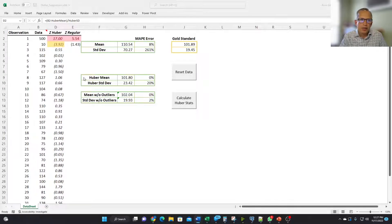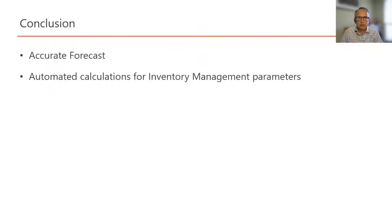One other question that might come up is: what if 500 is the actual demand — how do we take care of this? If you have such a question, please leave it in the comment section and I will answer it. I can think of at least two ways of doing this. In conclusion: if we want accurate forecasts, we need to take care of outliers in historical data. If we want to calculate inventory management parameters like safety stock and EOQ in an automated manner — especially needed when managing hundreds of thousands of products — then we need to deal with outliers in an automated manner. Huber's method is one way of doing this. If you like this video, please like and subscribe. If you have any questions, comments, or suggestions, please leave them in the comment section below. Thank you.